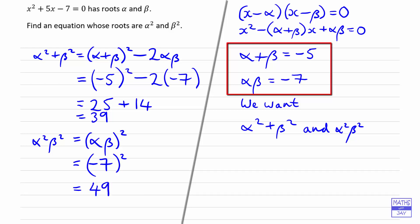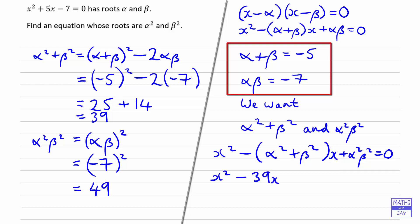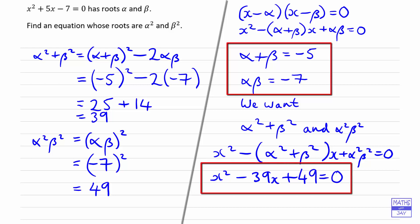So we can now simply write down the equation that we want. That's going to be x squared minus (alpha squared plus beta squared) times x plus alpha squared beta squared equals 0. Substituting in the numbers: x squared minus 39x plus 49 equals 0.